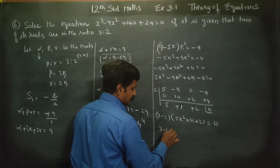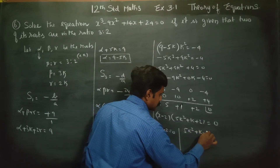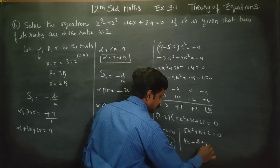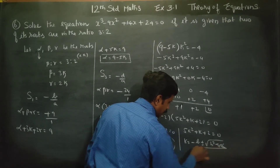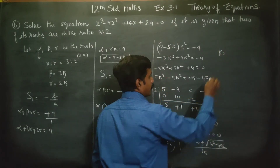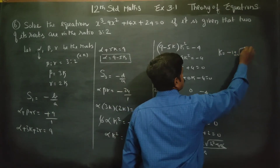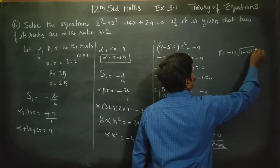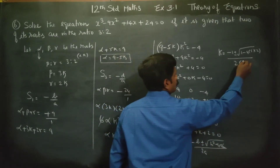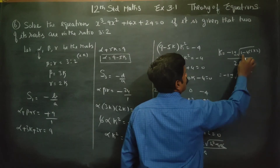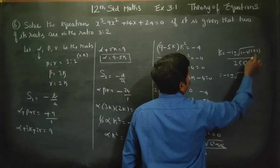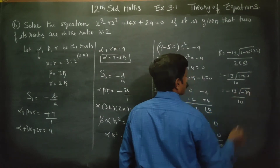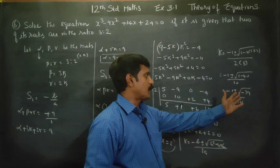So either x minus 2 equals 0, giving x equals 2, or 5k square plus k plus 2 equals 0. Applying the quadratic formula: k equals minus b plus or minus square root of b square minus 4ac divided by 2a. Here b equals 1, so k equals minus 1 plus or minus square root of 1 minus 40, all divided by 10, giving minus 1 plus or minus root of minus 39 over 10. These are complex roots.